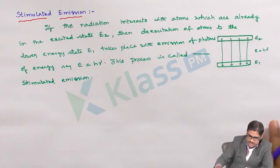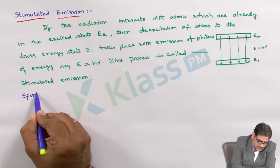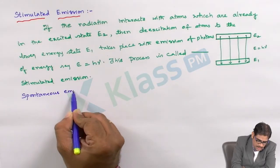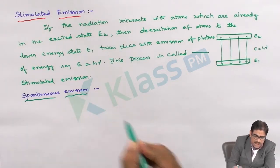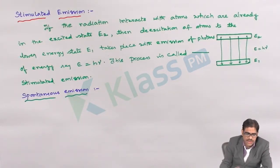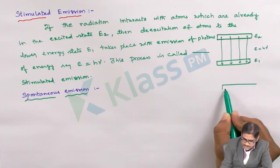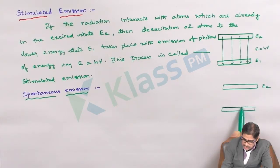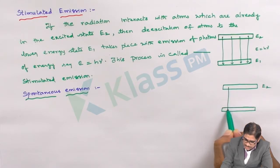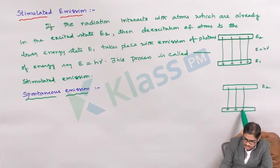Coming to the next case, we discuss about spontaneous emission. The atoms are getting de-excited to the lower energy state, liberating an amount of energy equal to hν. Here also, we understand spontaneous emission using the two energy states E2 and E1, where de-excitation of atoms takes place from E2 to E1 — that is, from higher energy state to lower energy state.